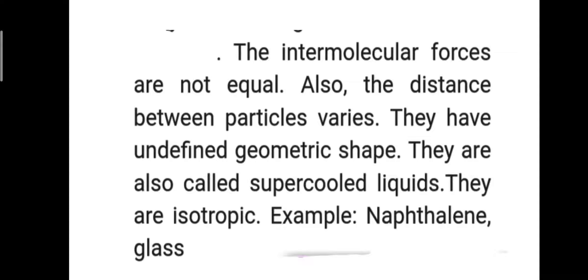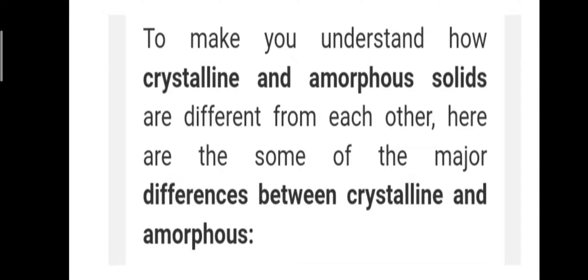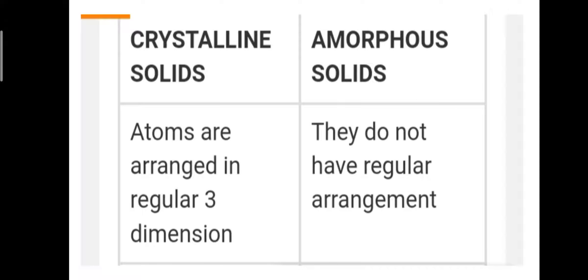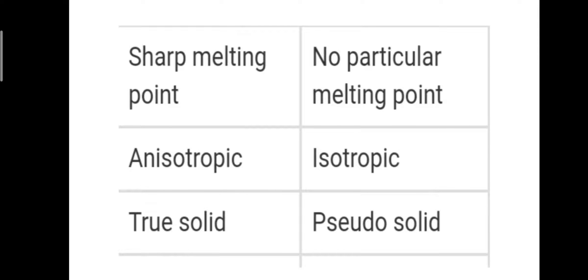To understand how crystalline and amorphous solids differ, here are some major differences. In crystalline solids, atoms are arranged in a regular three-dimensional pattern; in amorphous solids, there is no regular arrangement. Crystalline solids have a sharp melting point.